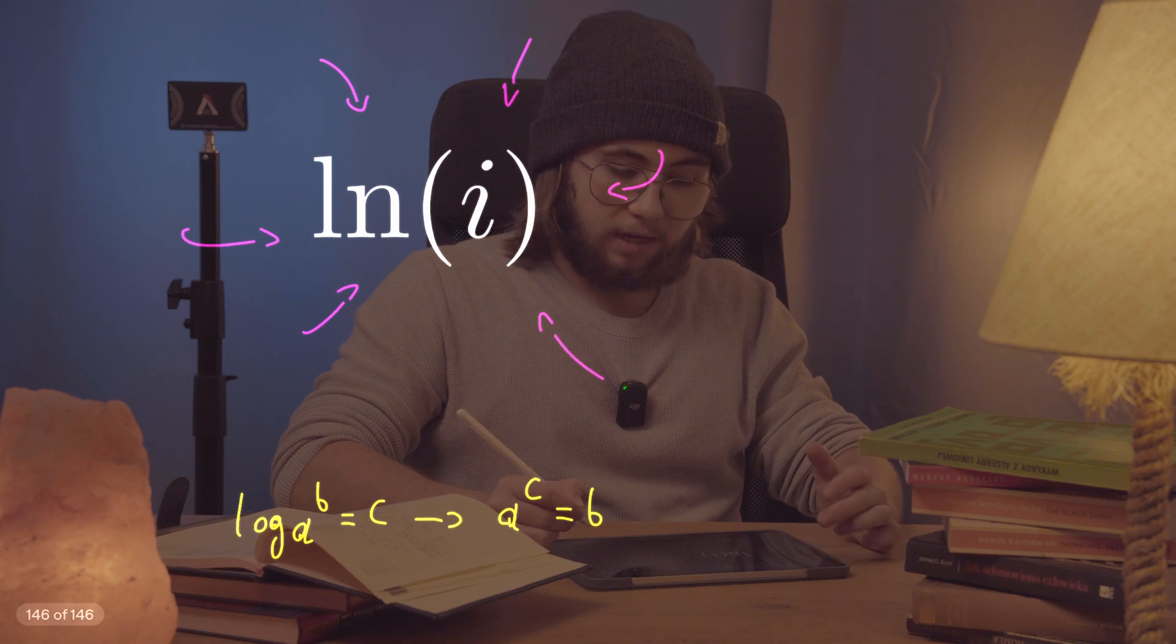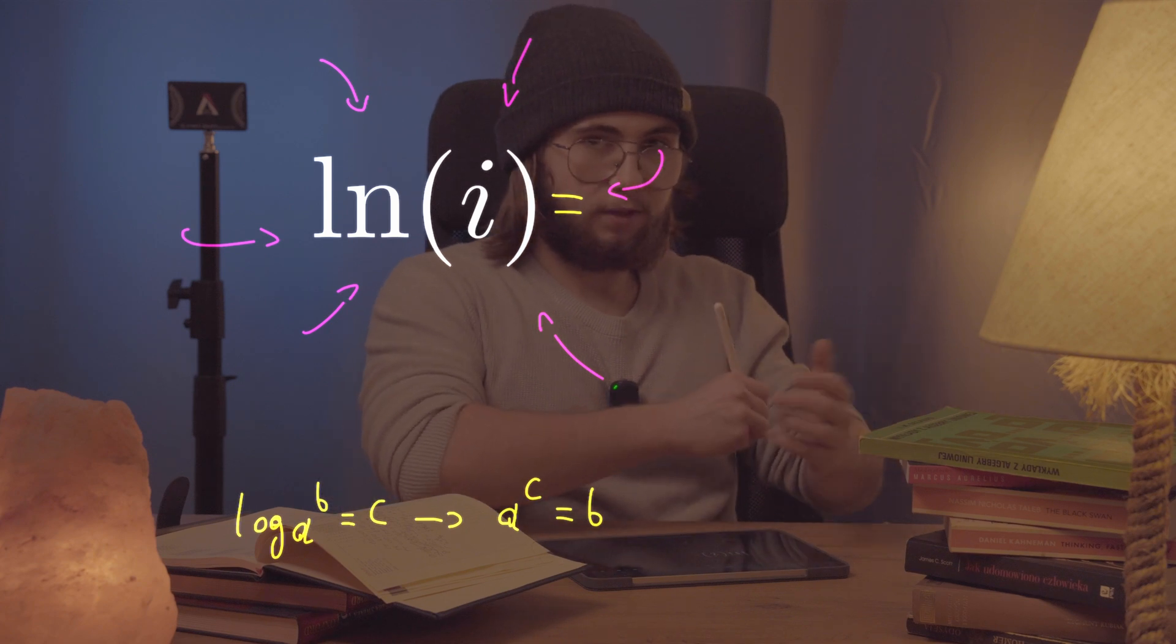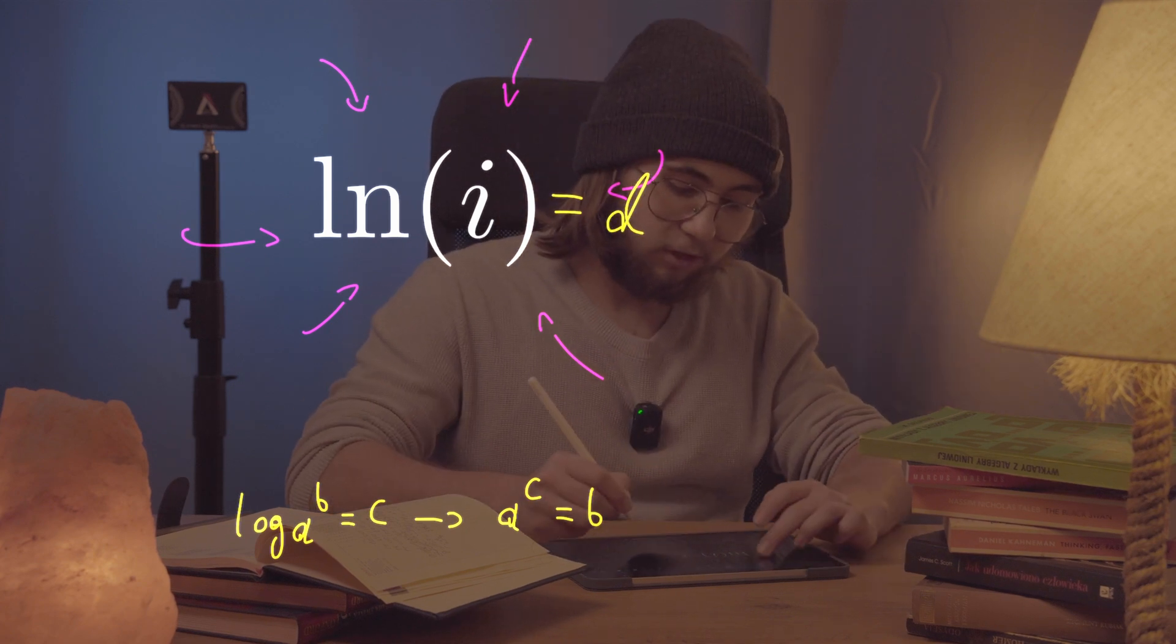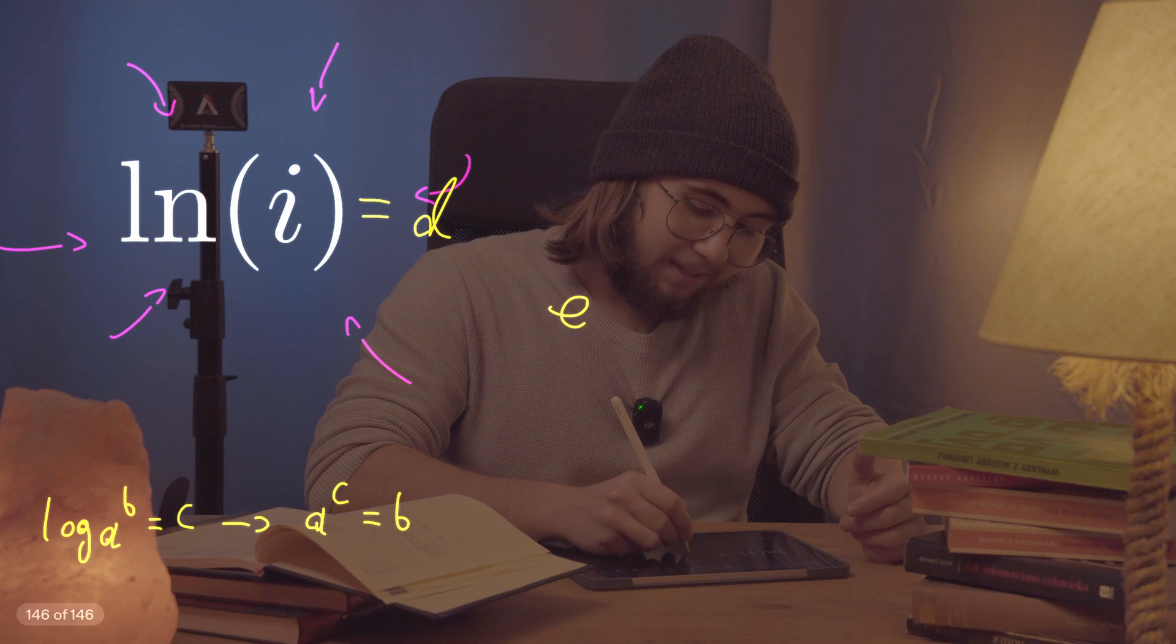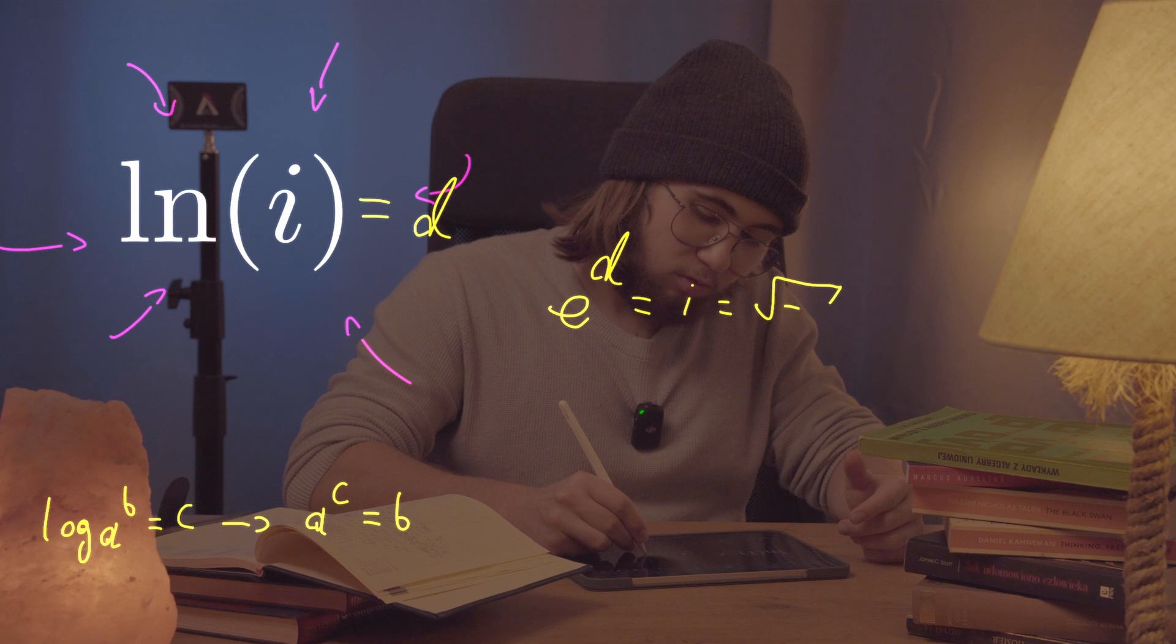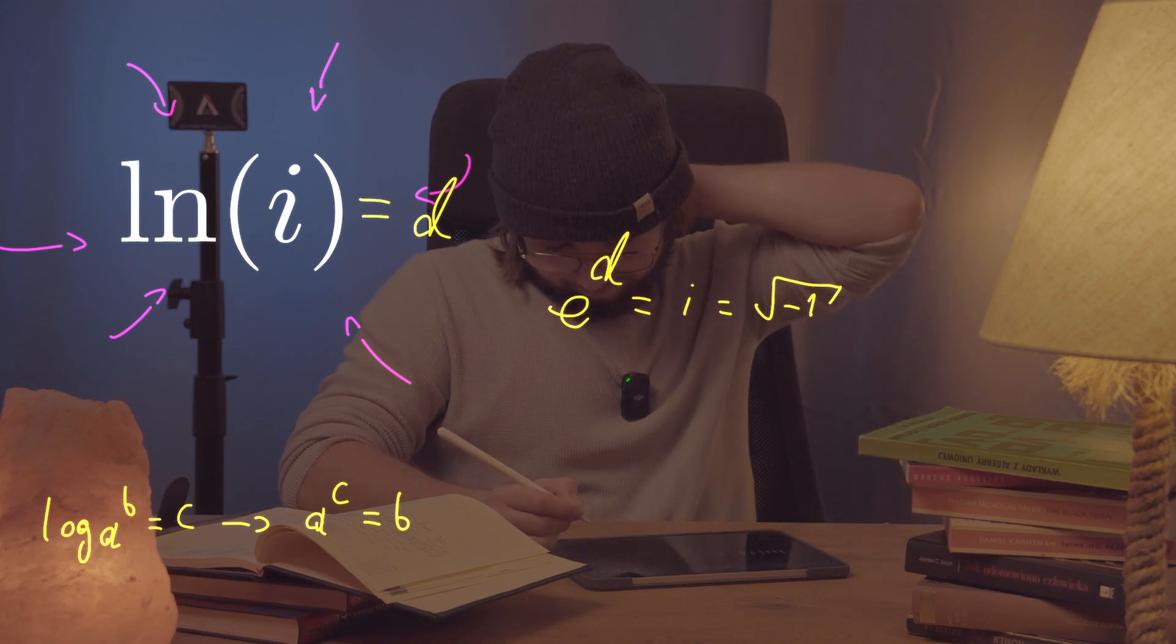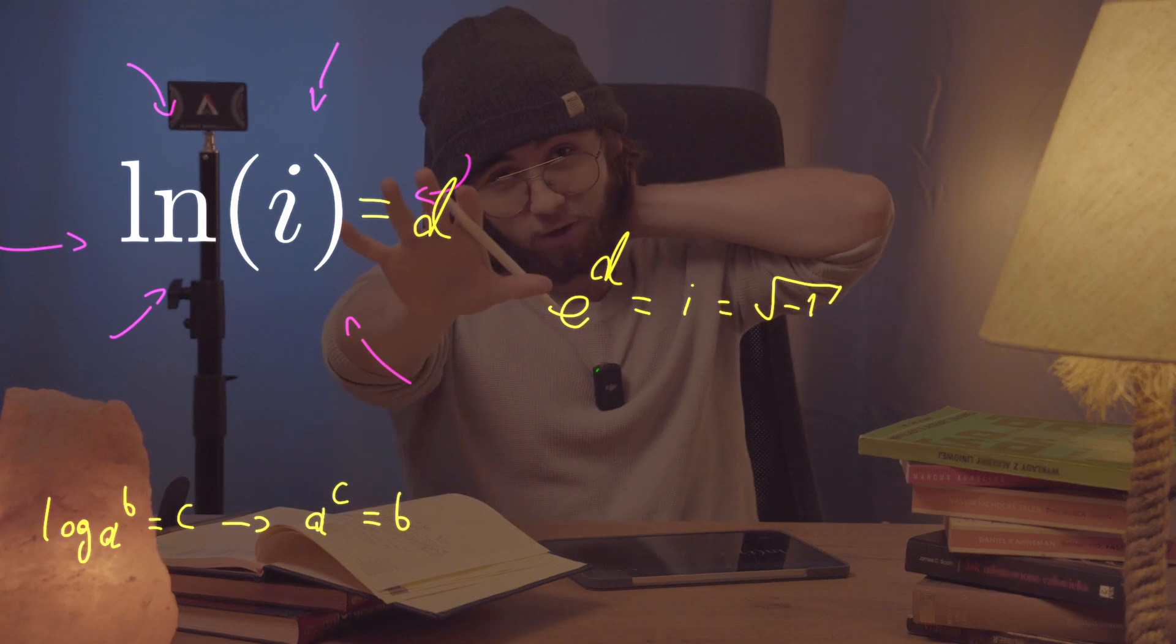But the problem is that if I have some kind of a number, such as natural log of i is equal to that number, let's maybe call it d or something, then it would mean that e to the power of d is equal to i, which is the square root of negative 1. I mean, okay, let's try and do it.